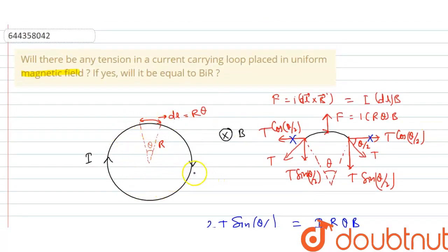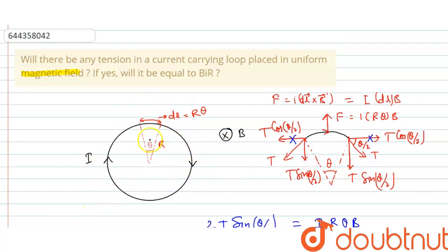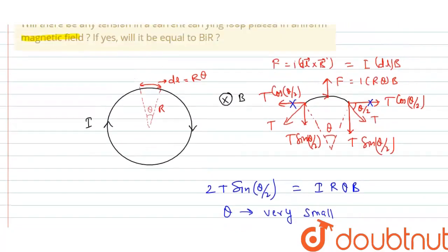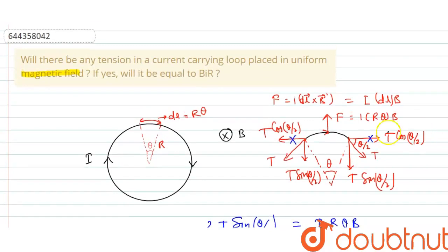The net force acting on this wire is zero because forces in opposite directions cancel out everywhere around the loop. However, the tension in the wire is B·i·R. I hope you have understood this explanation. Thank you.